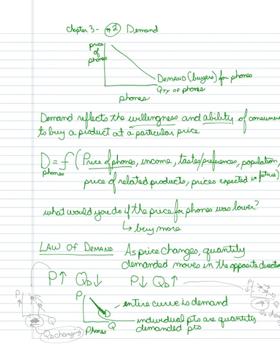And those individual points on that curve are quantity demanded points. What we're trying to do is distinguish between the entire demand curve and the quantity demanded. What that does for us is it means that as the price changes, we're not actually changing the demand curve. This curve is staying the same.